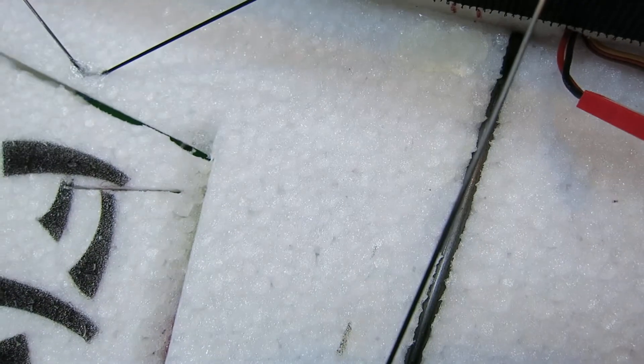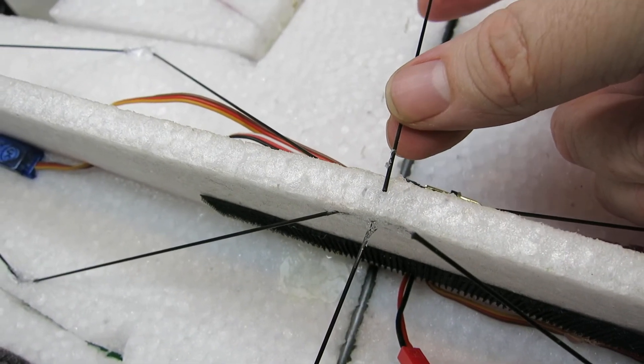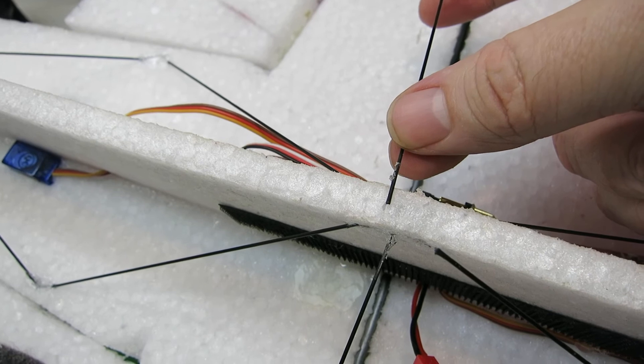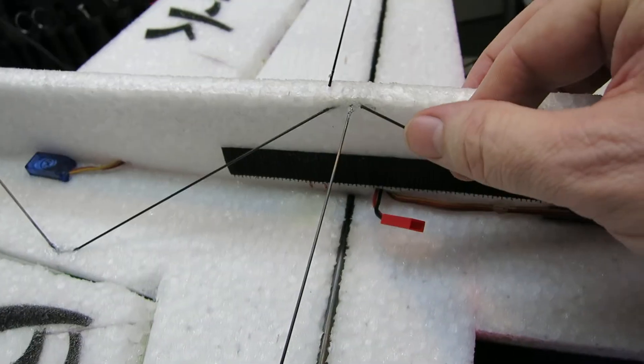And then put the CF Rod into the hole and let it sit in the glue. I had to show you how it got put into the hole.